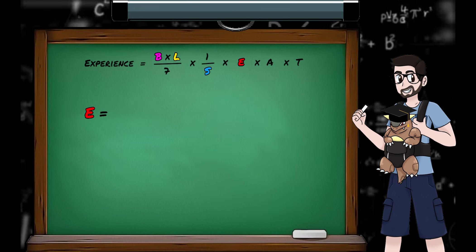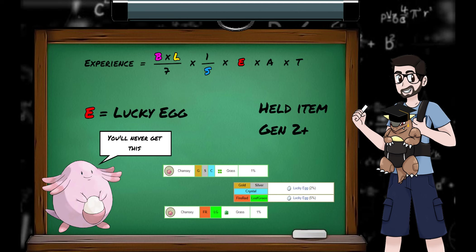We're onto the E variable now. This one's pretty simple. E stands for EGG! The egg in question is the Lucky Egg. This is a held item, so it's only relevant for generations 2 and 3. It's found as a potential held item on Wild Chansey.